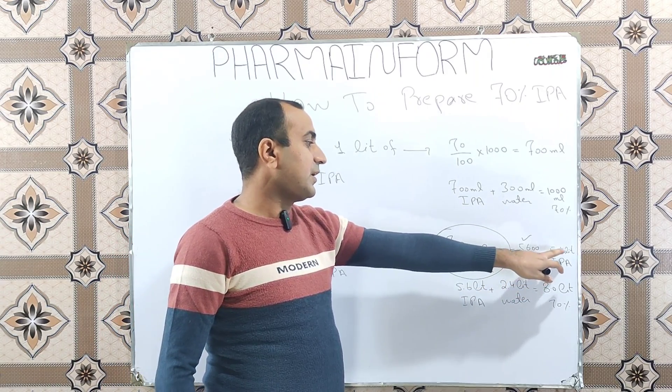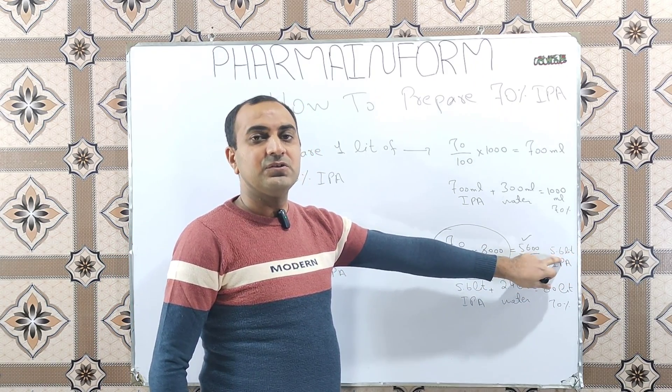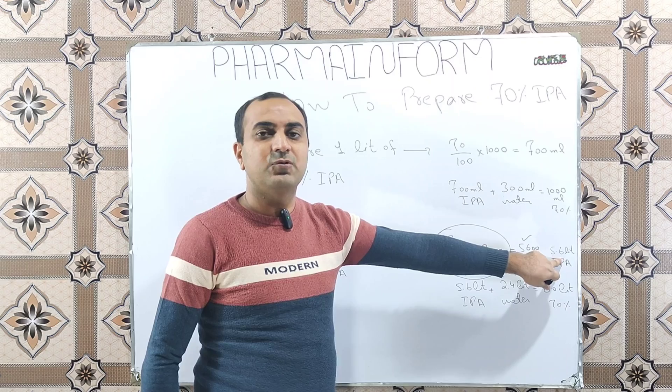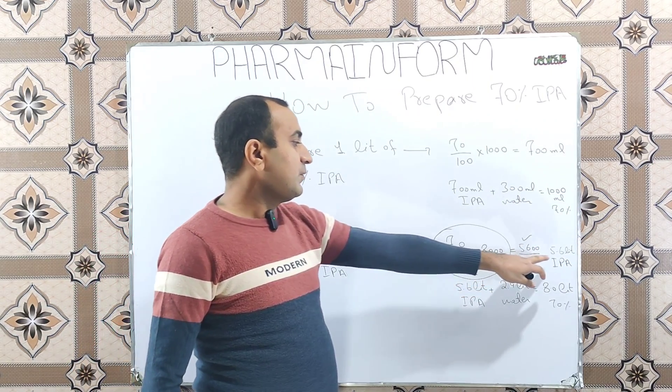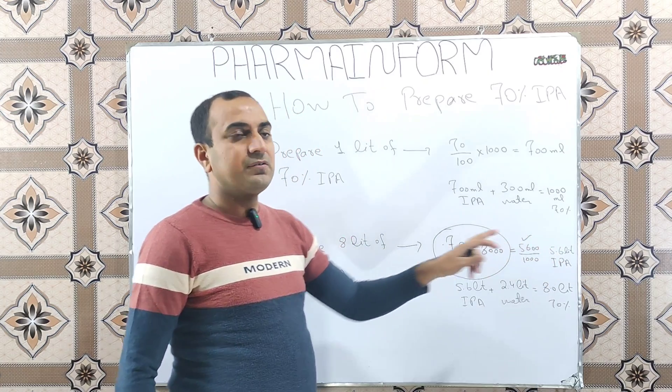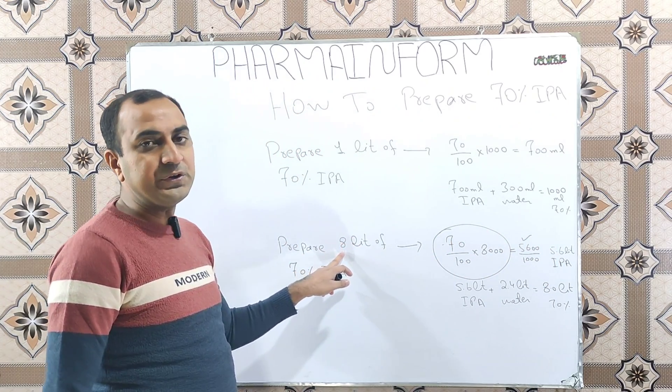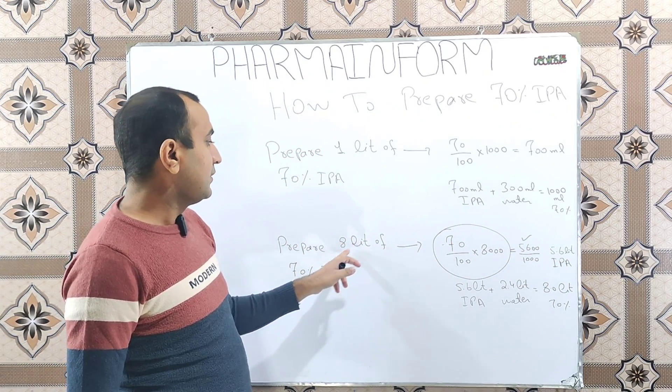So, the answer will be 5.6 liters. This quantity is basically for the isopropyl alcohol or IPA and we will minus this quantity from total volume, total volume is 8.